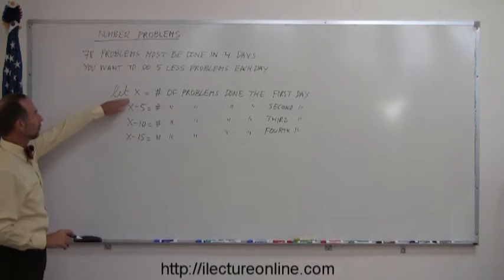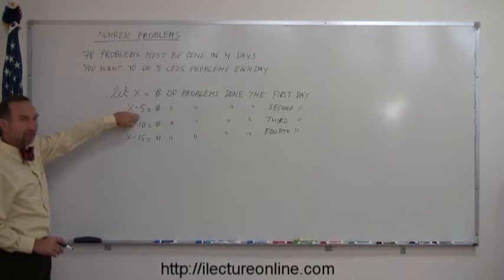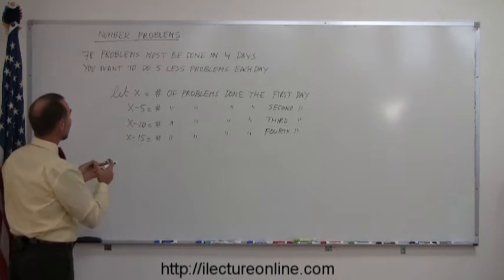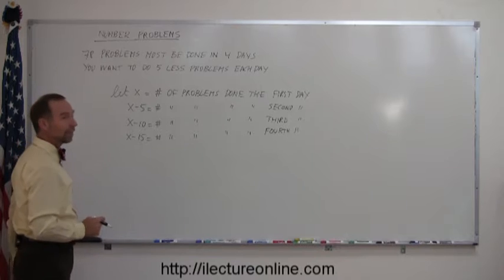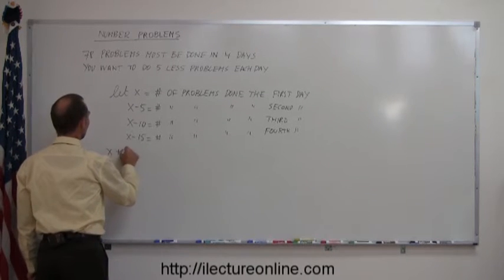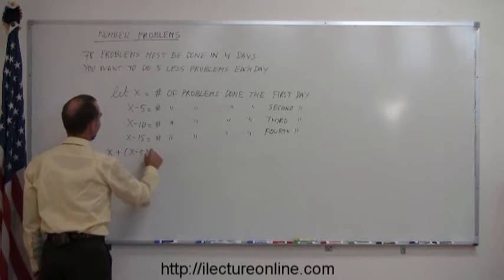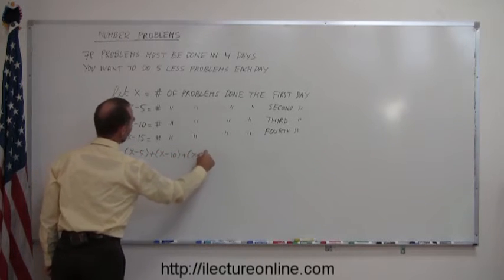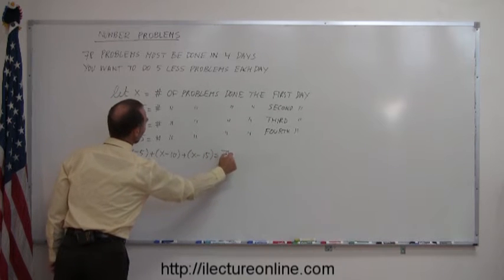So on the first day you'll do x problems, 5 less on the second day, 10 less on the third day, 15 less on the fourth day. And if you add them all together, they should add up to all 78 problems that you must do. So we can then write that x plus x minus 5 plus x minus 10 plus x minus 15 add up to the 78 problems you have to do.